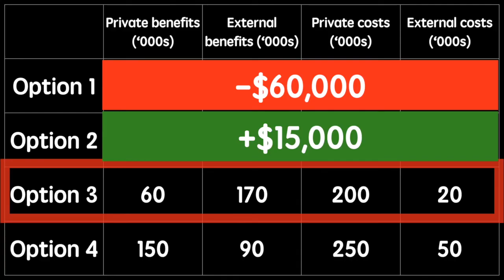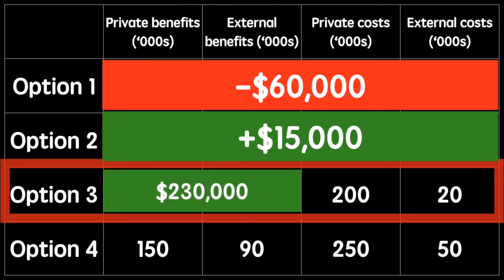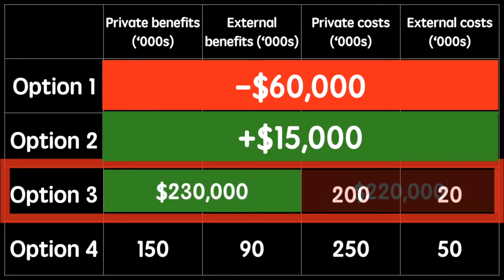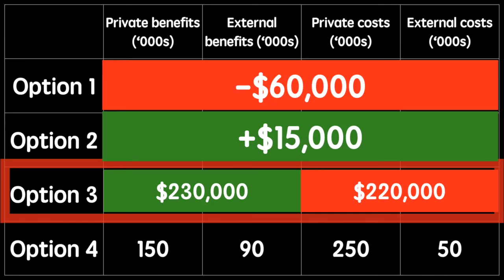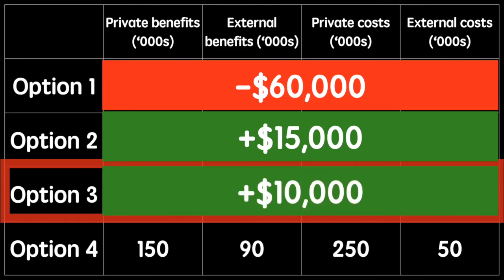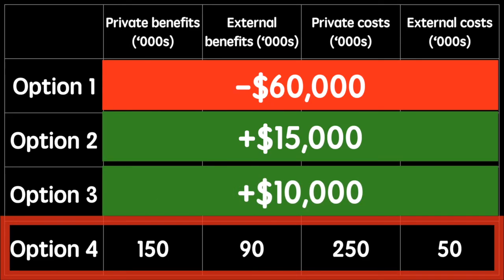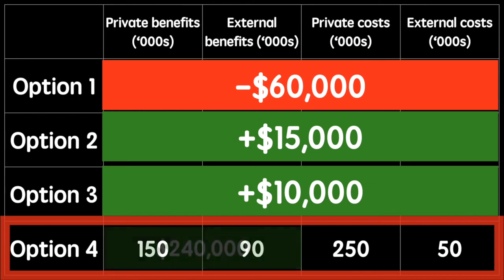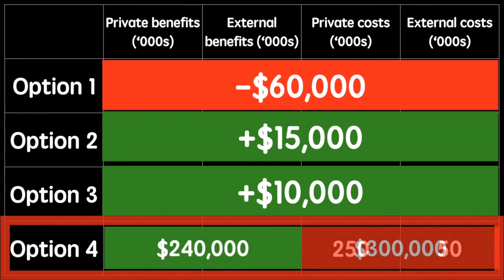Moving on to option three, we can see that the sum of the benefits is $230,000 and the costs are $300,000 and the net loss is therefore $60,000.